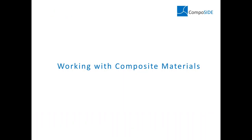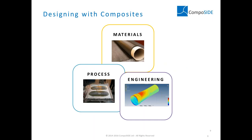Before we jump into the CMDB add-on, let's give an overview of working with composite materials — what it means and what's involved. Designing with composites requires a high degree of integration compared to more conventional materials like steels. This requires high data quality and the ability to use data efficiently — you've got to team up the materials, the process, and the engineering all with your design environment and material properties.